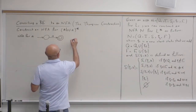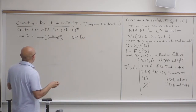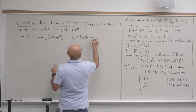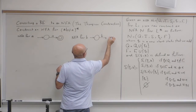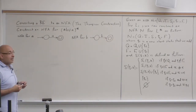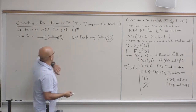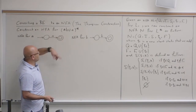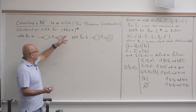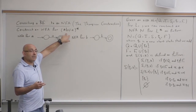An NFA for B can be done in a similar way: a start state, then B, then accept. So now I have an NFA for A, I have an NFA for B, and I have these operations. I know how to do an NFA for concatenation, union, and star. Then I can construct an NFA for this regular expression.